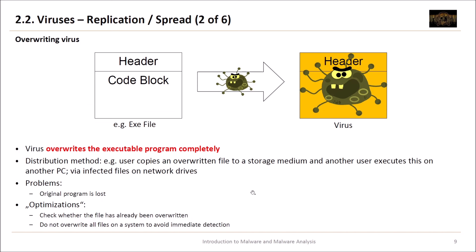Let's start with the overwriting virus. The virus overrides the executable program completely. The distribution method is, for example, a user copies an overwritten file to a storage medium and another user executes it on another PC — for instance via infected files on network drives, especially in companies using shared drives. The problem from the virus's perspective is that the original program is lost, so a user will notice the program does not run. Optimizations would be to first check whether the file has already been overwritten, and to not overwrite all files to avoid immediate detection.